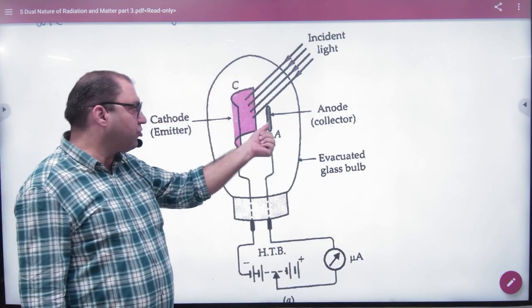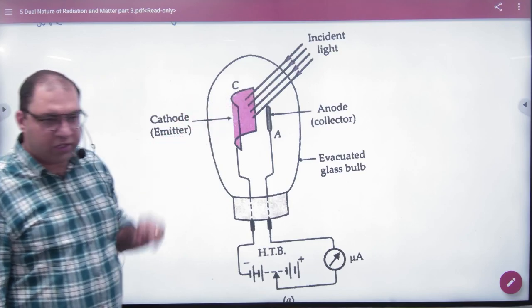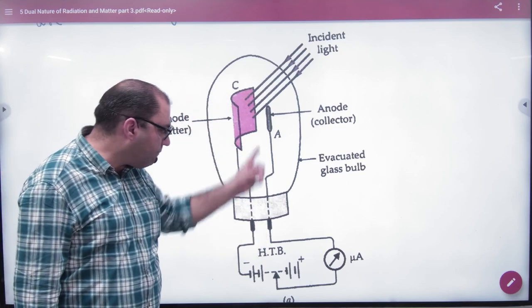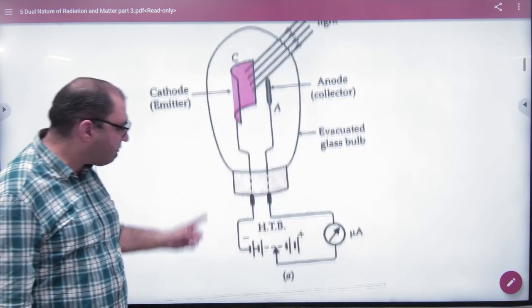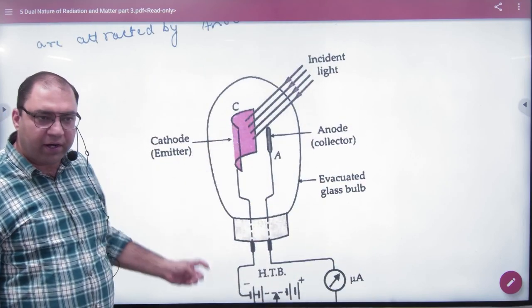We have a positive plate here. The positive plate pulls the electrons. The battery has positive and negative terminals. The electrons are given back to the plate. The circuit is completed through the battery.